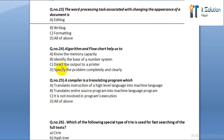Question number twenty-four: algorithms and flowcharts help us to option A: know the memory capacity. Option B: identify the base of number system. Option C: direct the output to printer. Option D: specify the problem completely and clearly.